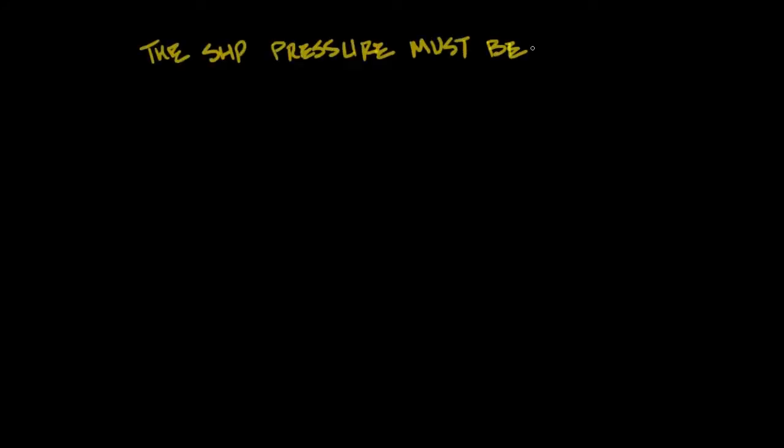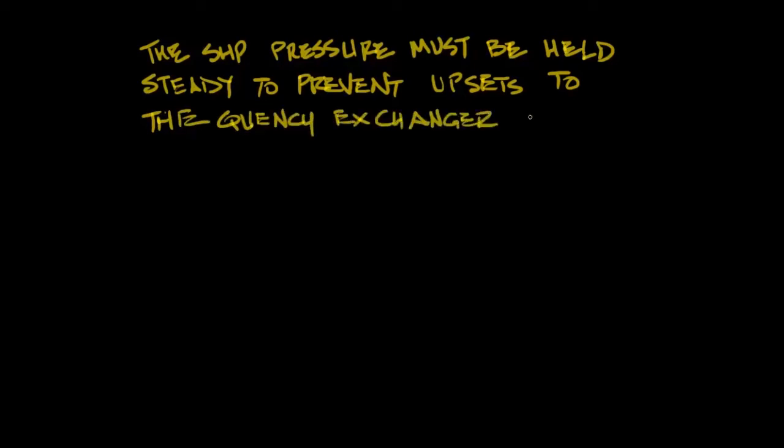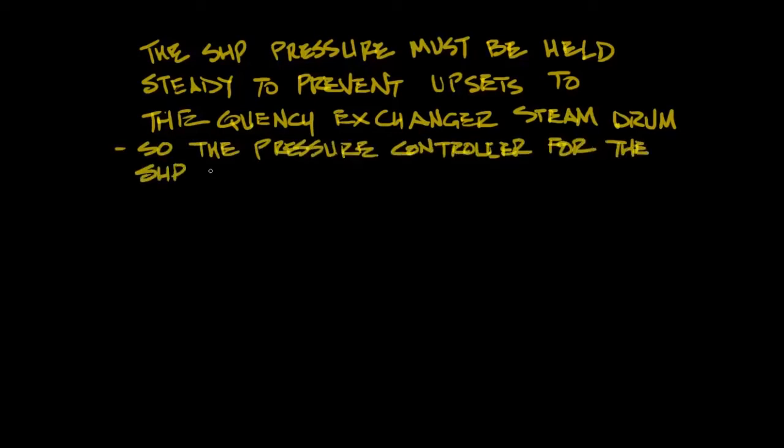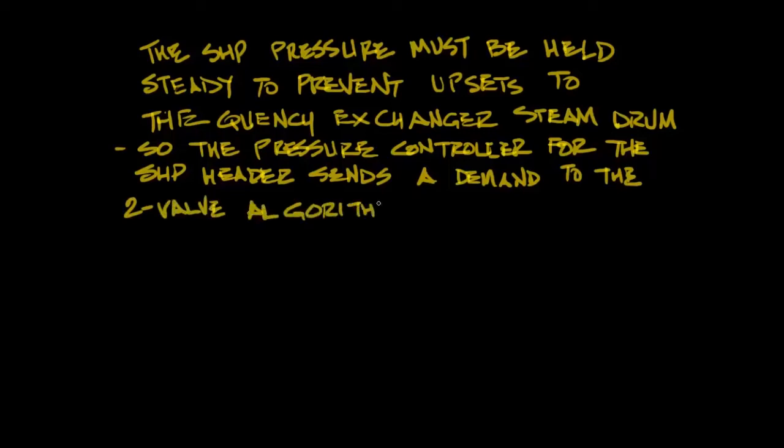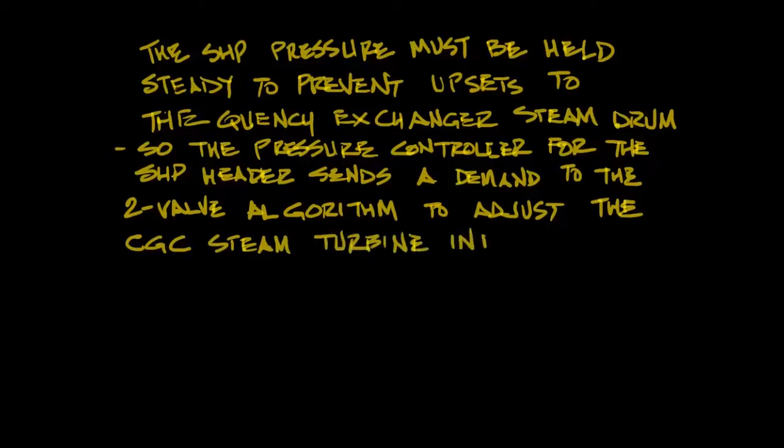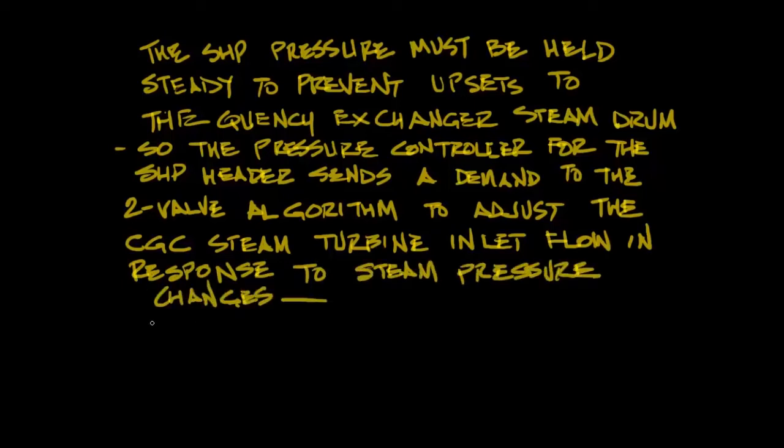The super high pressure steam pressure must be held steady in order to prevent upsets to the quench exchanger steam drum. You don't want high levels, low levels, so you have to manage that by keeping that pressure constant. The pressure controller for the SHP header will send a demand to the two valve algorithm to adjust the flow of the crack gas compressor steam turbine inlet in response to a steam header pressure change.